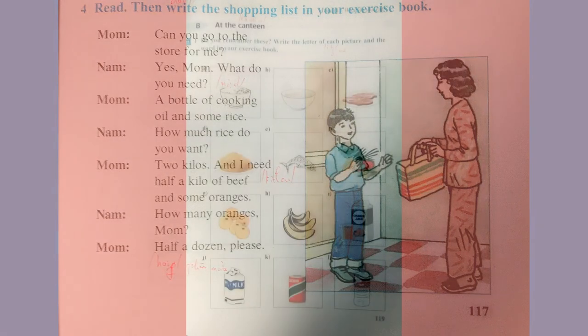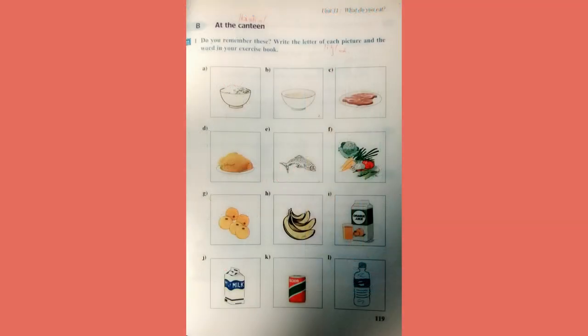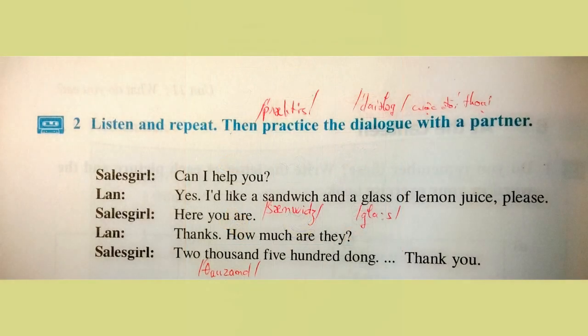Section B: At the canteen. Exercise 2: Listen and repeat. Can I help you? Yes, I'd like a sandwich and a glass of lemon juice, please. Here you are. Thanks. How much are they? Two thousand five hundred dong. Thank you.